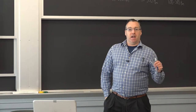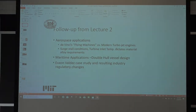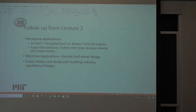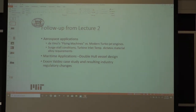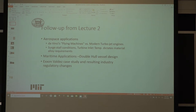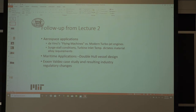A follow-up from last week's lecture on aerospace applications: we talked about da Vinci's flying machines and the fact that even though he had many designs, he was not able to implement most of them. The materials of the time were mostly engineered wood and silk. We compared that with modern-day turbojet engines and did a case study on surge stall conditions leading to uncontained engine events.